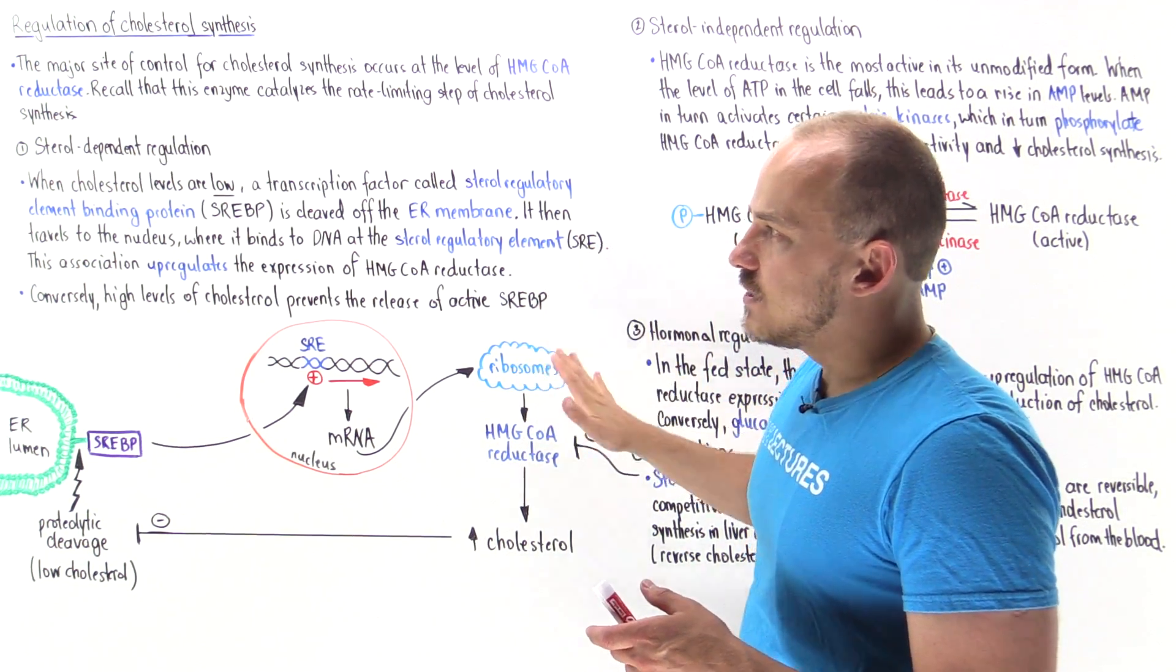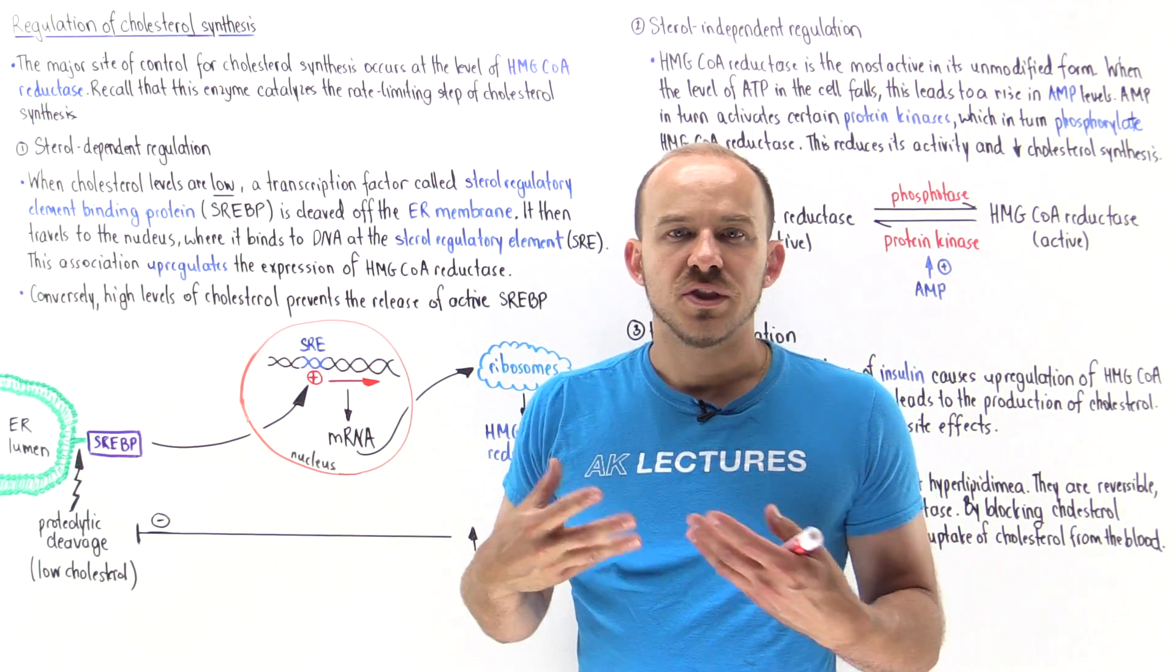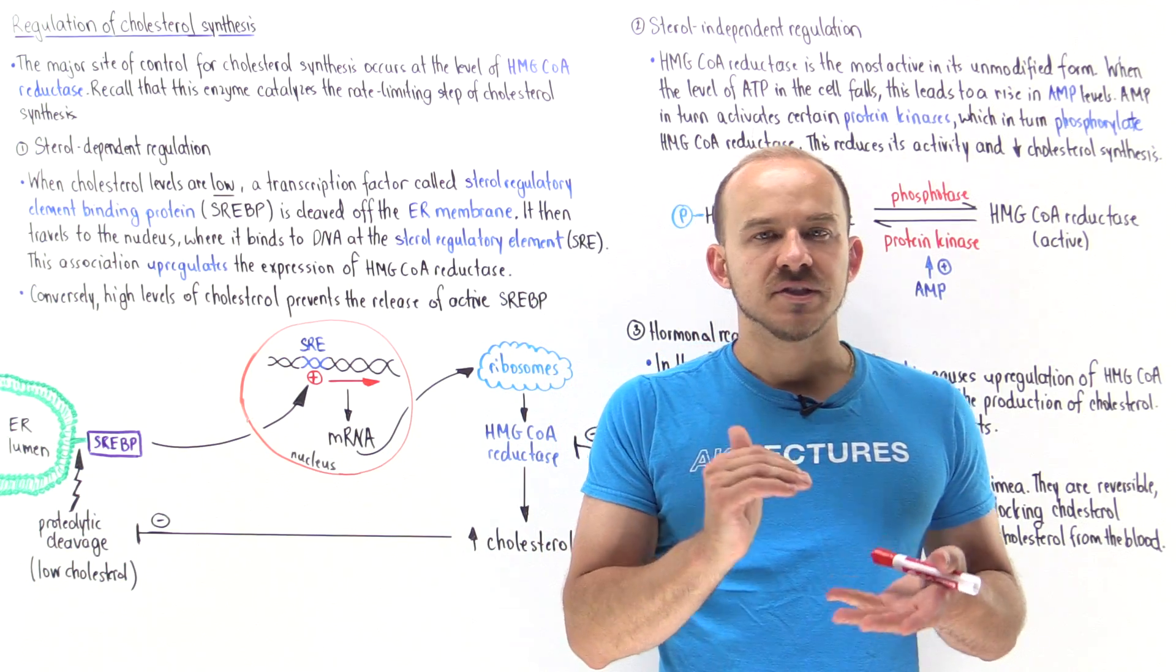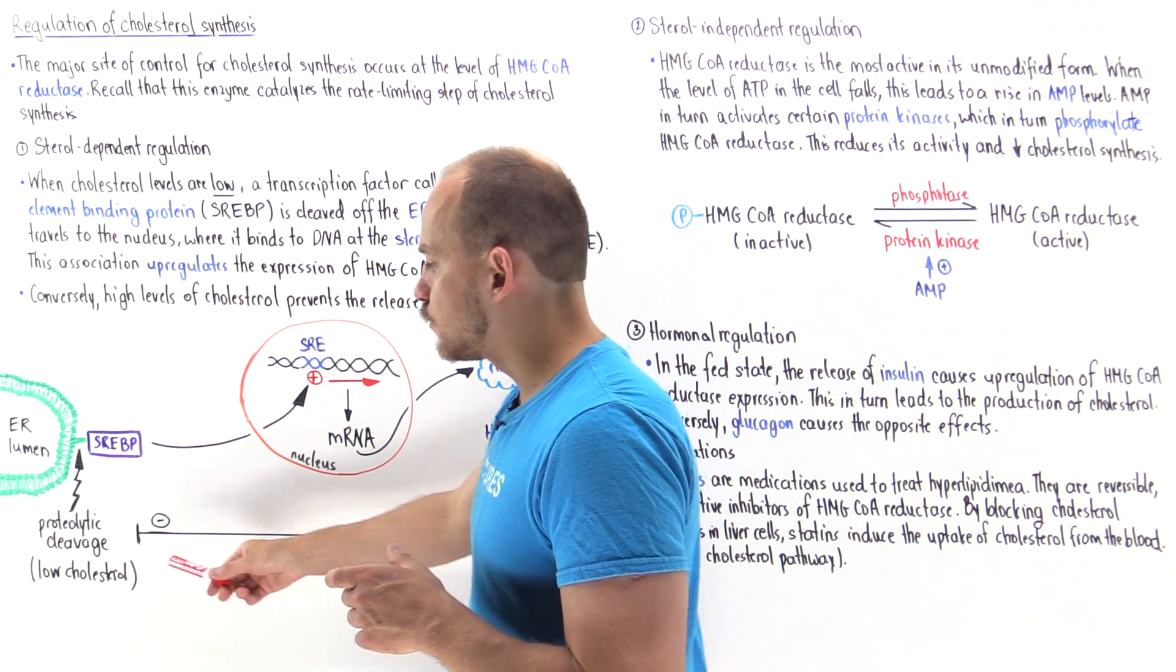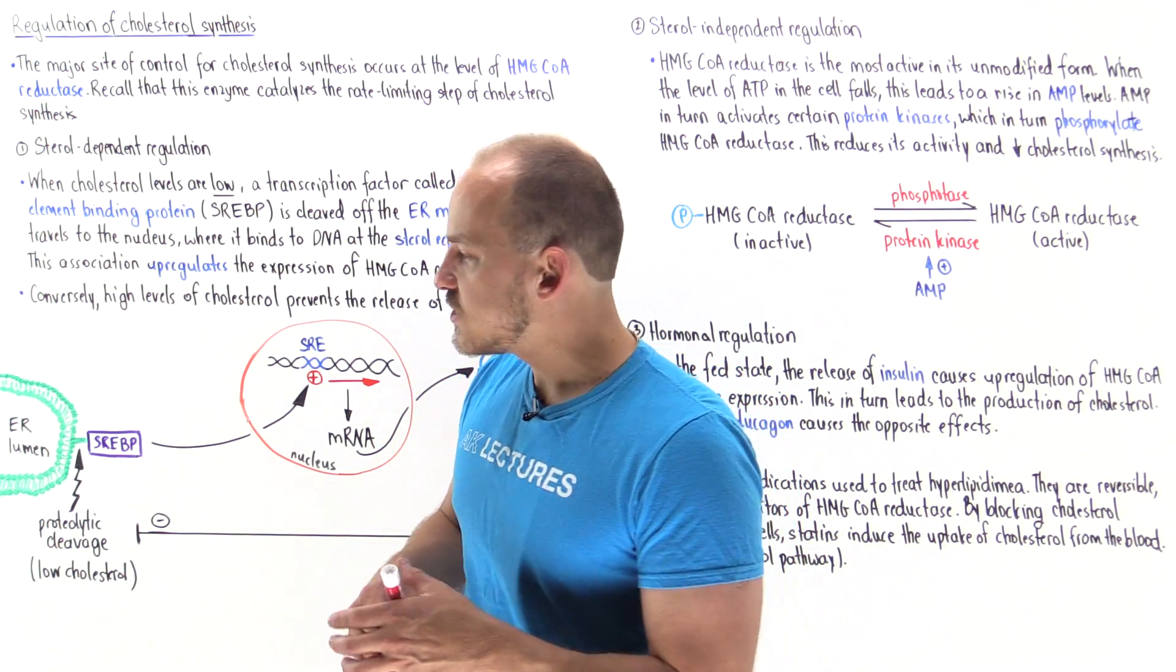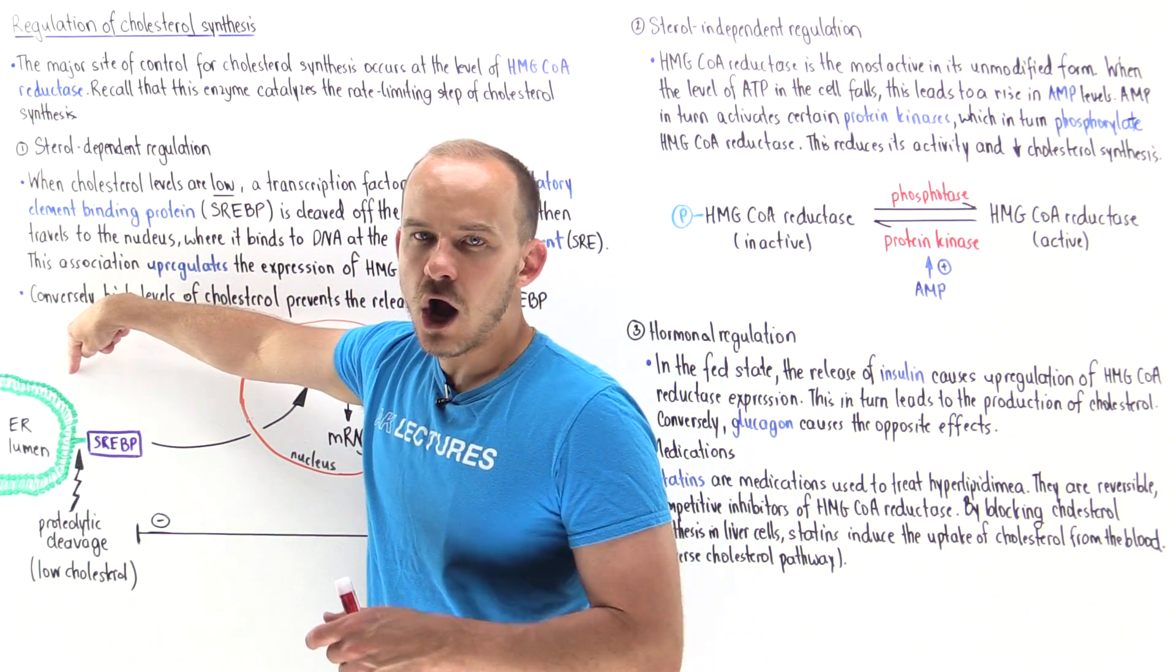So let's begin with sterol dependent regulation. Let's suppose within our body, specifically within the liver cells, we have low levels of cholesterol. If we have low levels of cholesterol that stimulates the proteolytic cleavage of an important transcription factor off the ER membrane.